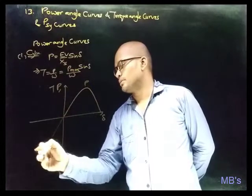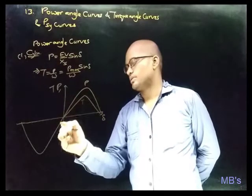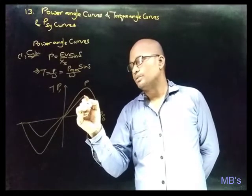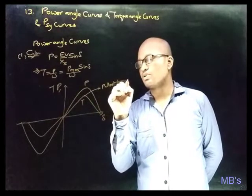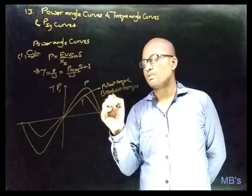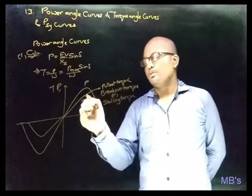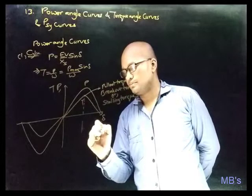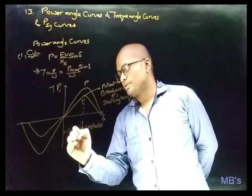The peak of the torque curve is called the pullout torque, breakout torque, or stalling torque. Beyond this value of load angle, torque and power decrease, which defines the unstable region. The region before the peak is the stable region. For a generator, P_max and T_max occur at δ equal to 90 degrees. The curves are approximately linear for δ in the range of 30 to 45 degrees.